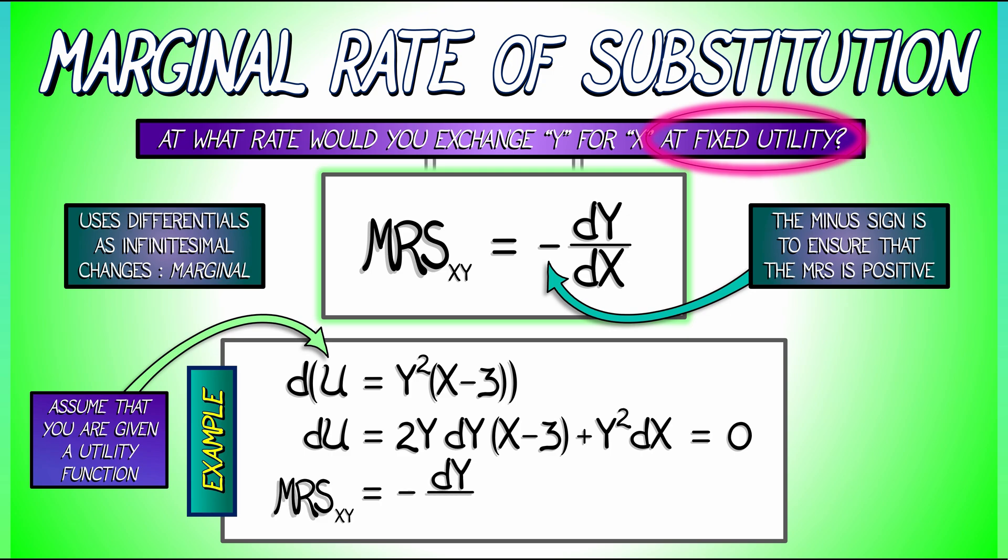Minus dY dX is equal to what? Well, I'm going to move that Y squared dX to the right. And then I'm going to divide through by 2Y times quantity X minus 3 times dX. And I am going to get as the answer, let's see, in the numerator we have minus Y squared. In the denominator we have 2Y times quantity X minus 3. A little bit of simplification gives us a final answer of Y divided by 2 times quantity X minus 3.